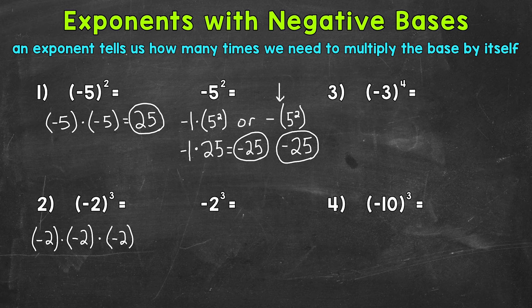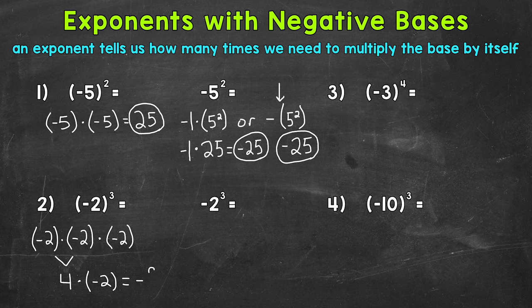Negative 2 times negative 2 — a negative times a negative equals a positive — so we get a positive 4. Then we have one more negative 2: positive 4 times negative 2. A positive times a negative equals a negative, so this gives us negative 8. Now for this one, we're going to get the same exact answer without parentheses, because remember, that negative is going to stay in front, so our answer is automatically going to be negative.